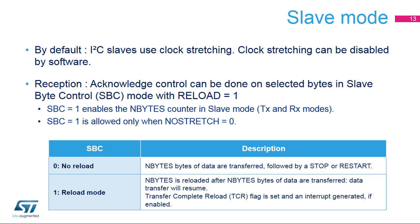In receive mode, when slave byte control is enabled with the reload bit set and the number of bytes to be transferred is 1, the transfer complete reload flag is set after each received byte, and the SCL line is stretched. This is done after data reception and before the acknowledge pulse. The receive buffer not empty flag is also set so the data can be read. In the TCR subroutine, an acknowledge or not acknowledge can be programmed to be sent after the byte is received. It is recommended to clear the SBC bit in transmission as there is no use for the byte counter in I2C slave transmitter mode.